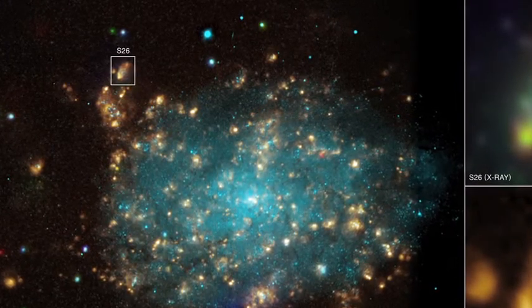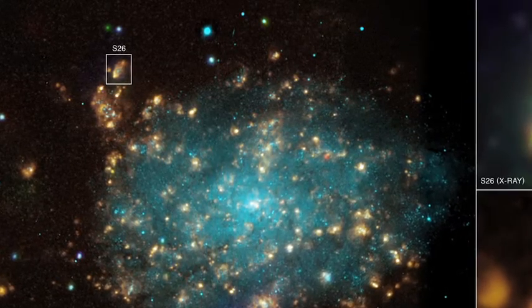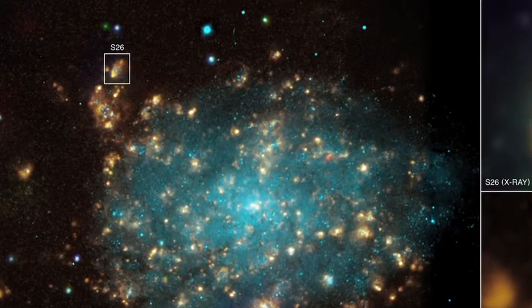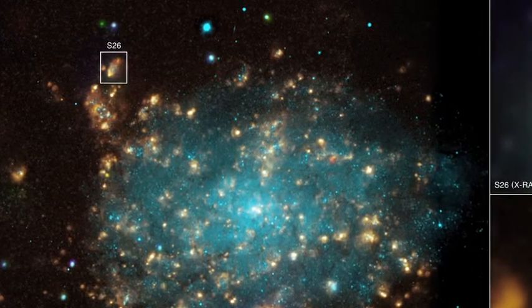This image shows hot gas swirling toward the black hole, forming a disk around it. Twisted magnetic fields in the disk form strong electromagnetic forces, creating two high-speed gas jets that shoot outward.